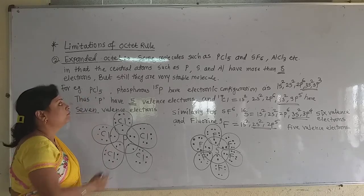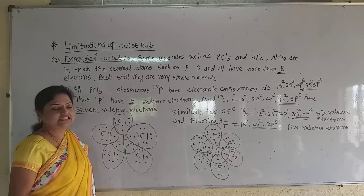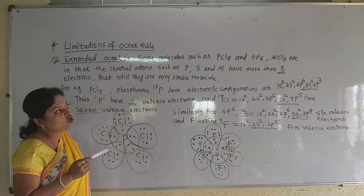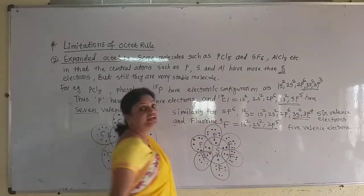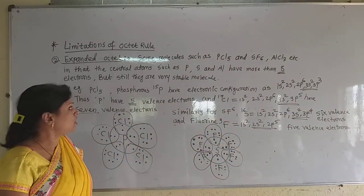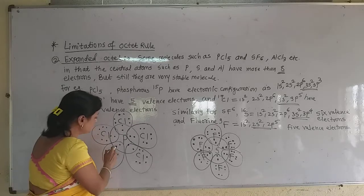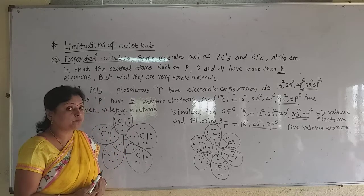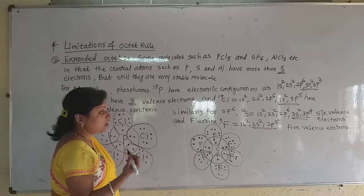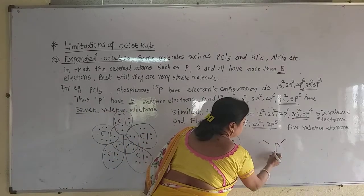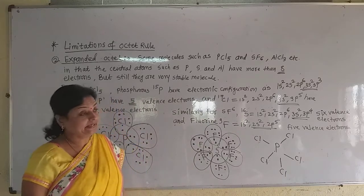Now see phosphorus pentafluoride. Phosphorus has atomic number 15. The electronic configuration is 1s2, 2s2, 2p6, 3s2, 3p3 — 15 electrons. This last valence shell contains 5 electrons, so there are 5 valence electrons in phosphorus. These 5 electrons are shown here by dots around the phosphorus atom. These 5 electrons take part in bond formation with 5 different chlorine atoms and form 5 bonds around it. We have 5 bonds around phosphorus, and this is the structure of the phosphorus pentachloride molecule.